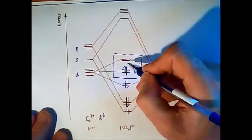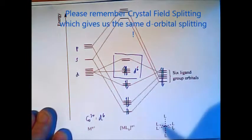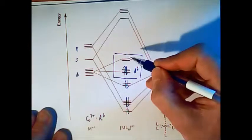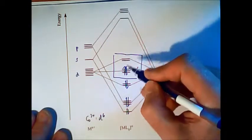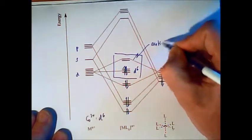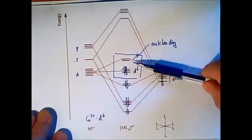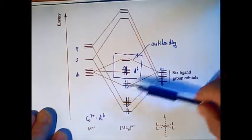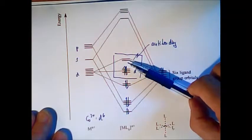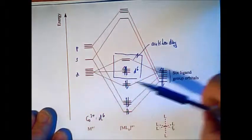Now we have again this octahedral splitting picture, 3 over 2. But now we have some more information. We know that these two are not just d orbitals, but they are anti-bonding. These orbitals are anti-bonding. That means if I put electrons in this higher level, I make the bond between ligand and metal weaker. So the more electrons I put into this level, the weaker will be the bond between the metal and the ligands.